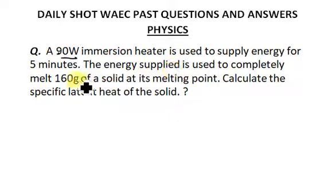The energy supplied is used to completely melt 160 grams of a solid at its melting point. Let's assume water, but not necessarily. Calculate the specific latent heat of the solid. I'm talking about ice, the solid state of water, but not necessarily—just using that as an assumption.